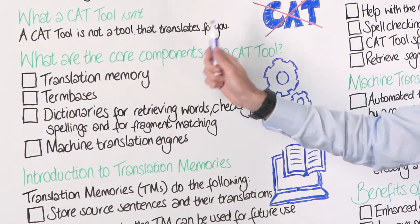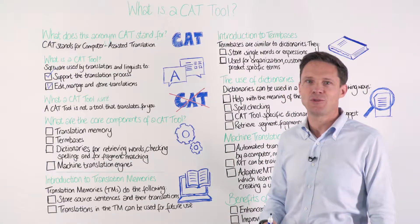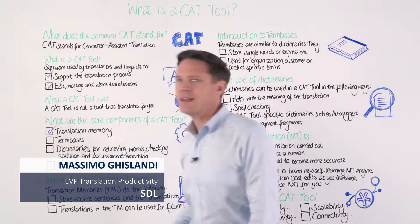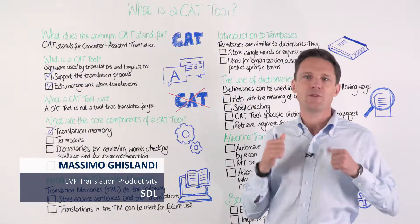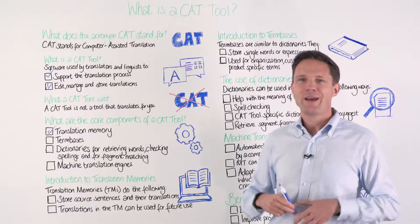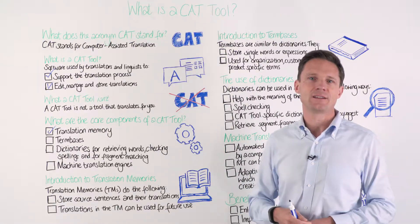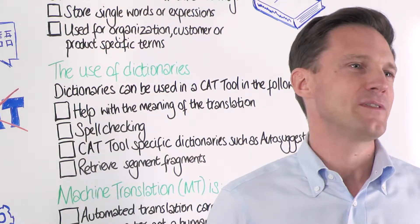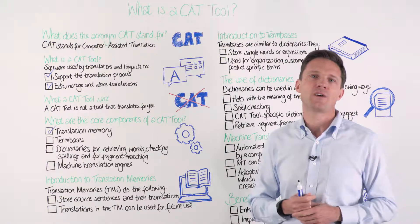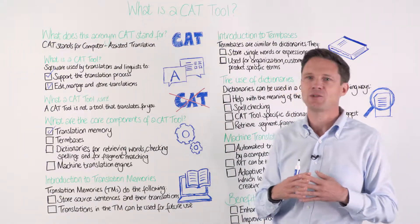Let's continue on what are the core components of a CAT tool — what's inside a CAT tool? So, translation memory. This is one of the key essential components of a CAT tool and actually is a technology that has been around for over 30 years. It's really old technology that has evolved over quite a long time, and that's kind of at the heart of a CAT tool.